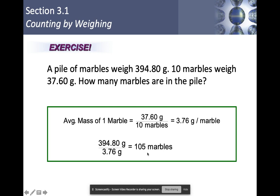Notice that if this doesn't work out evenly, you can't have a fraction of a marble, just like you can't have a fraction of an atom. So if you're counting something like atoms, you're always going to have to round to the nearest whole number — you can't have half of an atom.